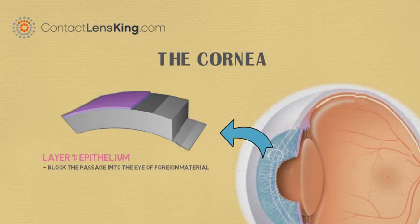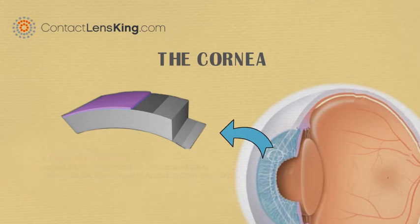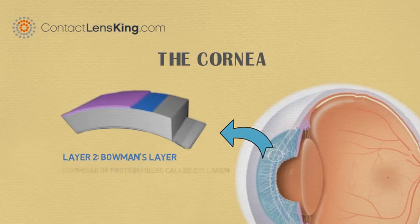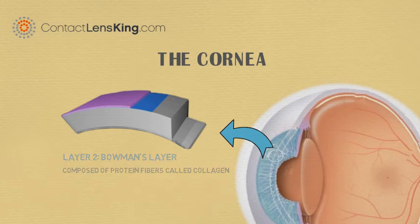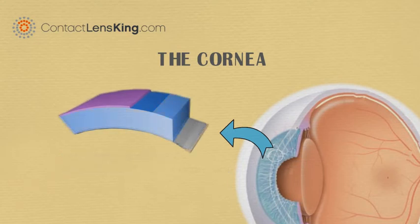and to provide a smooth surface to absorb oxygen and nutrients from tears. The next layer behind the epithelium is Bowman's layer, composed of protein fibers called collagen, which can form scars as it heals, impacting a person's vision.